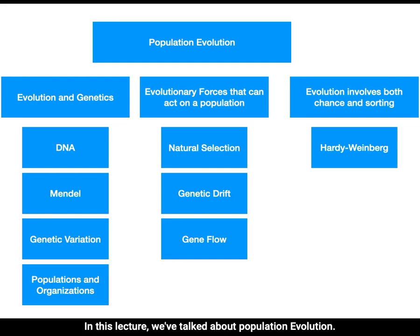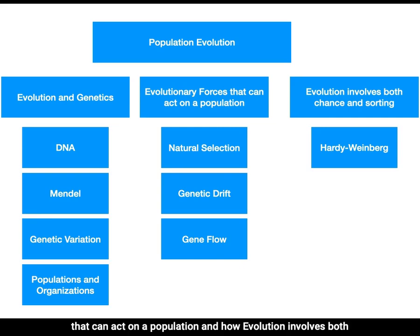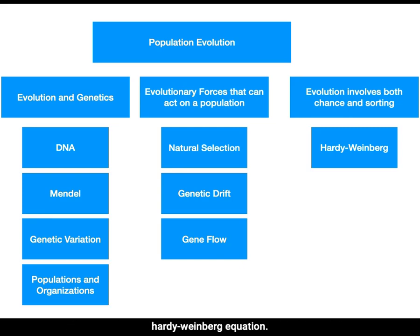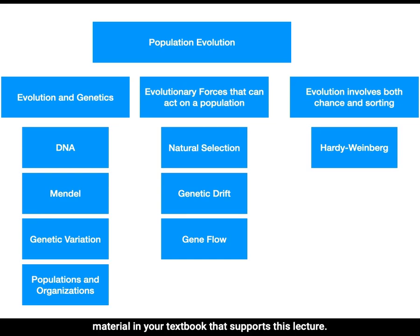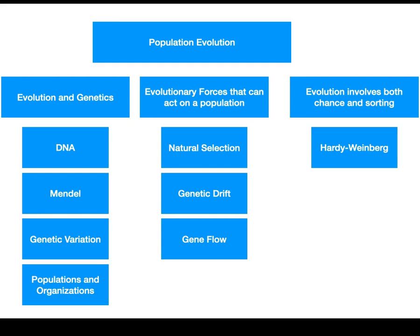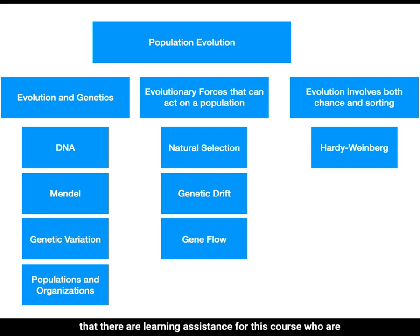In this lecture, we've talked about population evolution — evolution genetics, evolutionary forces that can act on a population, and how evolution involves both chance and sorting, and how we can measure that through the Hardy-Weinberg equation. If you have any questions about this lecture or the additional material in your textbook that supports this lecture, please reach out to your professor through email or by visiting office hours. You can also bring your questions to class, and don't forget that there are learning assistants for this course who are more than willing to help you with this information.